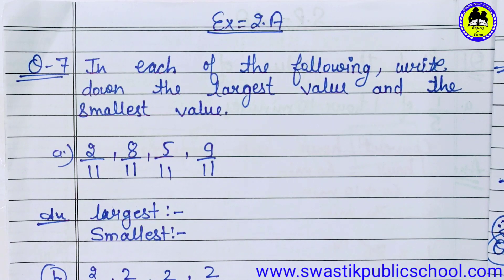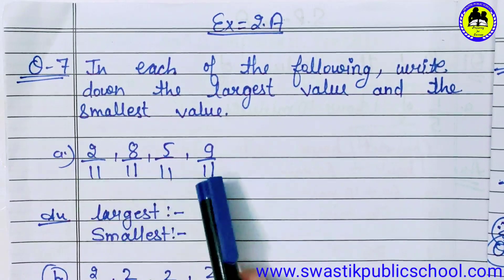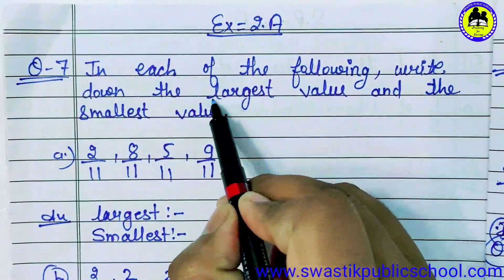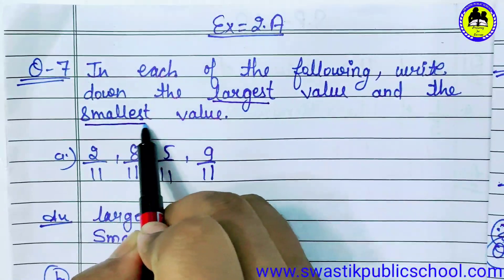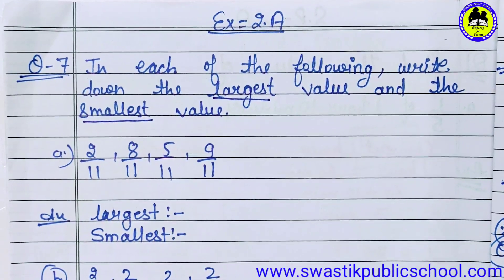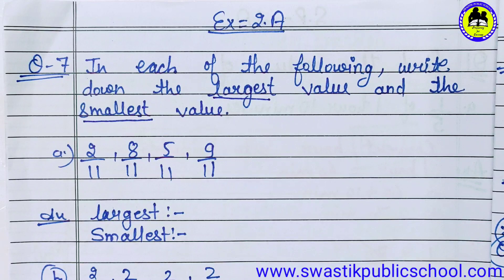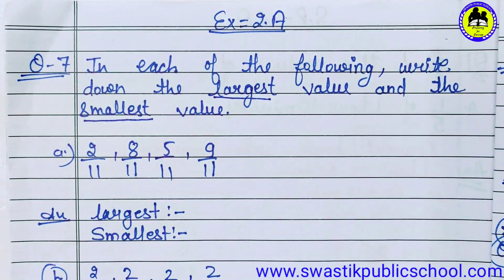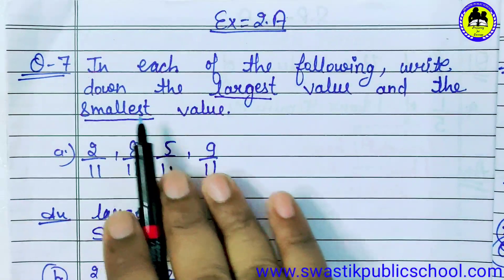We have to do question number seven. We have some fractions given. We have to find the largest value and smallest value. You can see these are like fractions — why? Because the denominator is the same. So we have to say like fractions, and find the largest and smallest value.